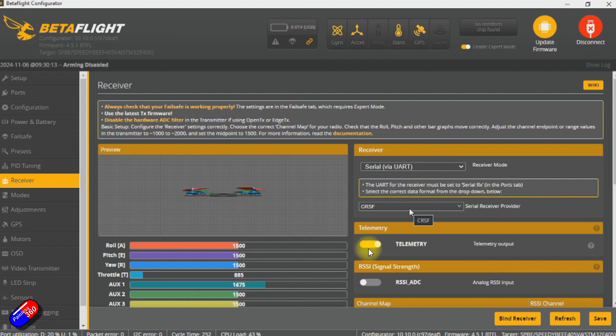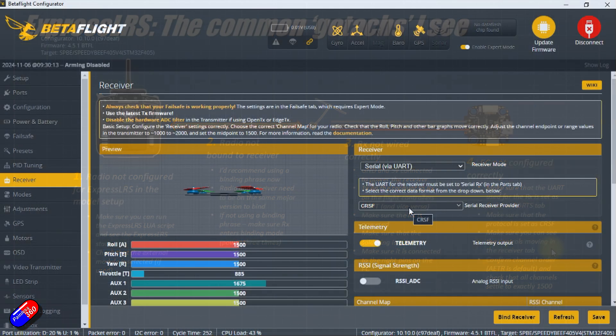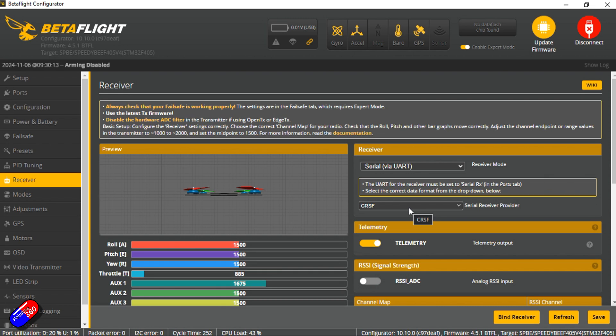Last little tip here is that if you want telemetry back to the radio, so if you have something like a GPS attached to this quad and you want GPS coordinates and all that stuff to go back to the radio, then turn on telemetry here and you'll get that telemetry back to the radio too. Once you've got that set up, you should be able to see the controls moving in the receiver tab as you move things around. That's the confirmation that everything is working okay.